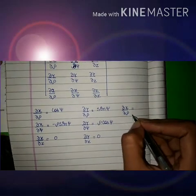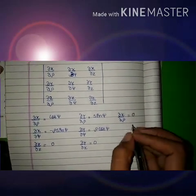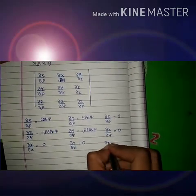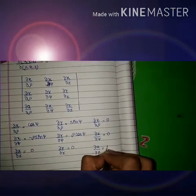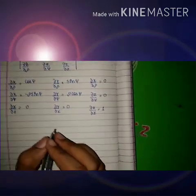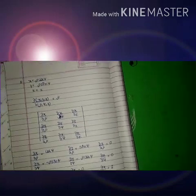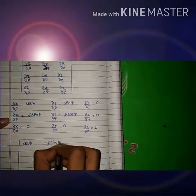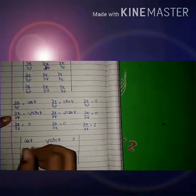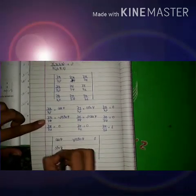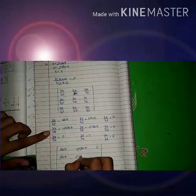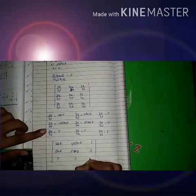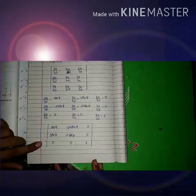For ∂z/∂ρ: since there is no ρ term in z, this equals 0. For ∂z/∂ψ: since there is no ψ term, this is also 0. For ∂z/∂z: this equals 1. Now putting all these values into the determinant, we get the matrix: [cosψ, −ρsinψ, 0; sinψ, ρcosψ, 0; 0, 0, 1].